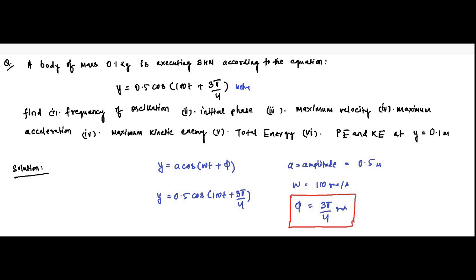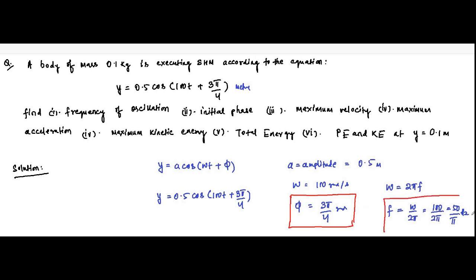We know that angular frequency ω = 2πf, where f is frequency in hertz. So the frequency of oscillation f = ω / 2π = 100 / 2π = 50/π hertz. That is the frequency of oscillation calculated.